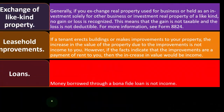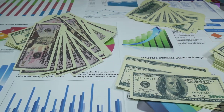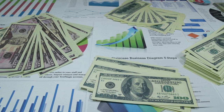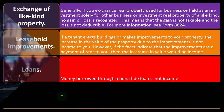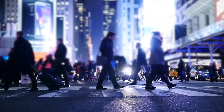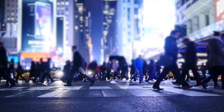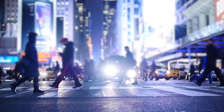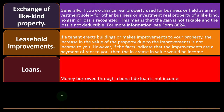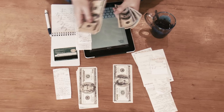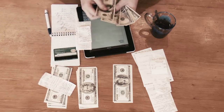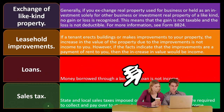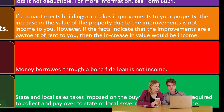Loans: money borrowed through a bona fide loan is not income. Business capital comes from equity, reinvested business income, or outside sources such as loans. Loans are an inflow of cash, but not income, because you are obligated to pay them back. It's similar to renting purchasing power — typically to buy equipment — and you'll return the principal plus interest. Therefore, loan proceeds are not income when received.